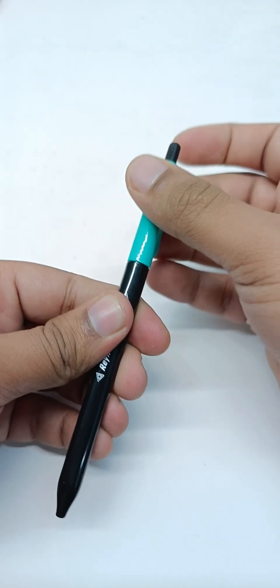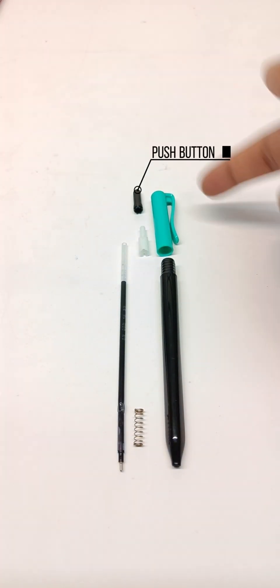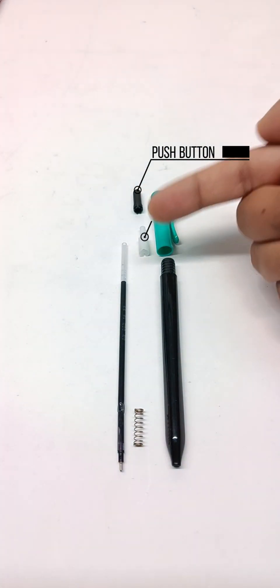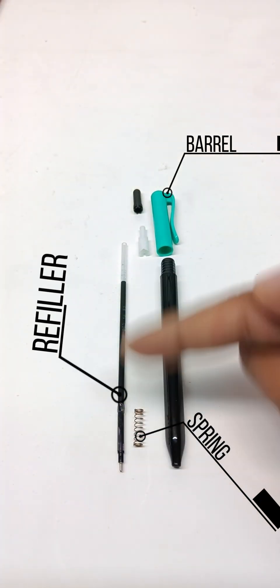Let's quickly dismantle everything. We have a push button, a thrust device, a barrel, a spring, as well as a refiller.